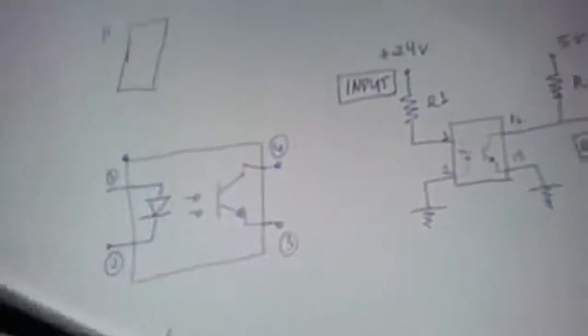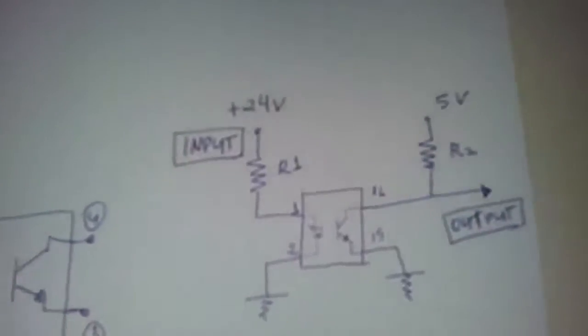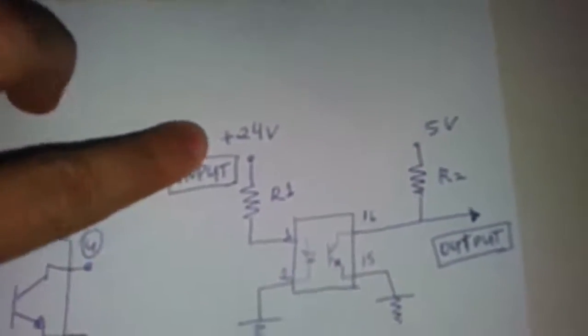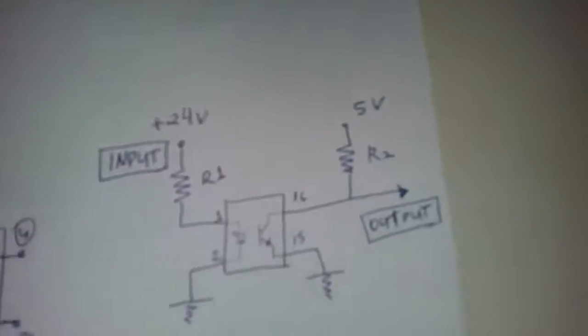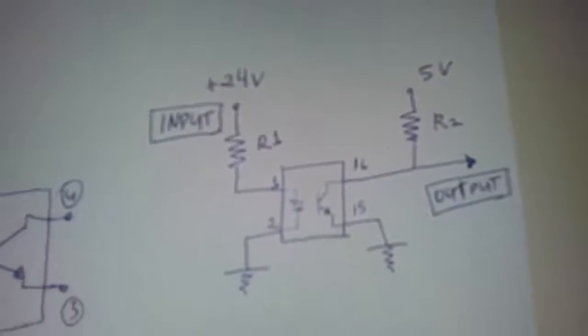Hi there! Now we have four optical isolators to isolate circuits that cannot be together. For example, a large voltage in Arduino. Let's see. We have here 24 volts, but we like to read the input in Arduino. So we have to make an isolator.